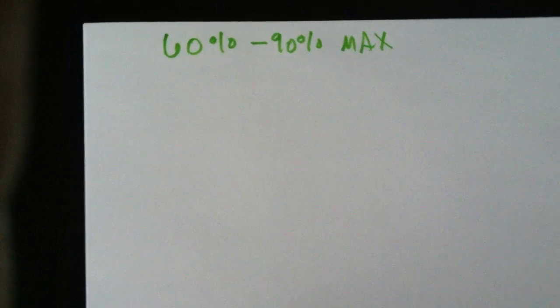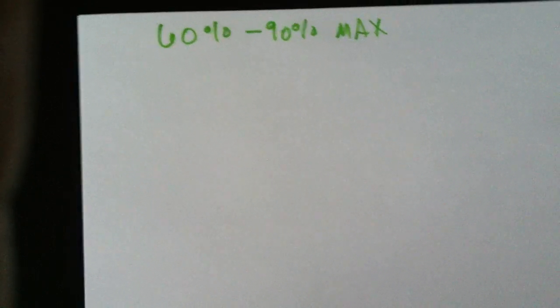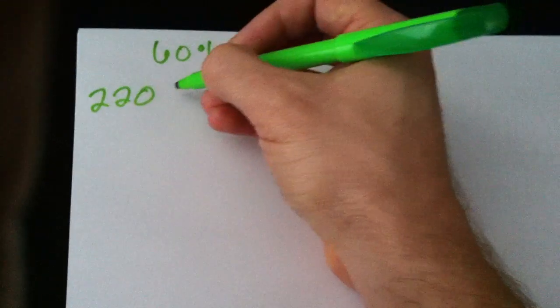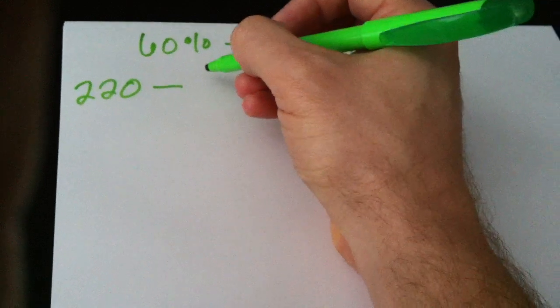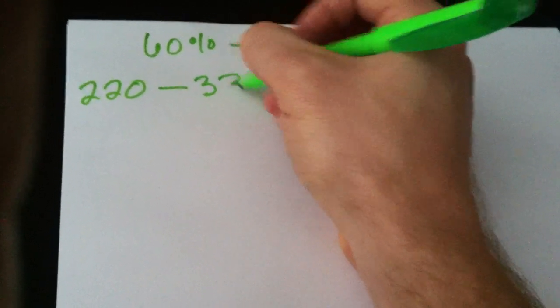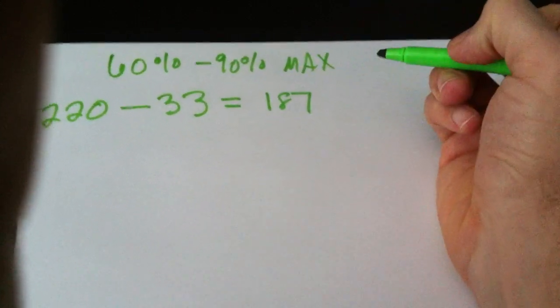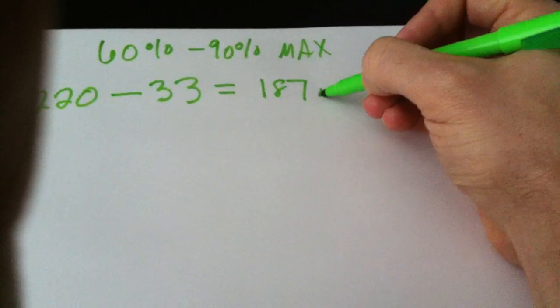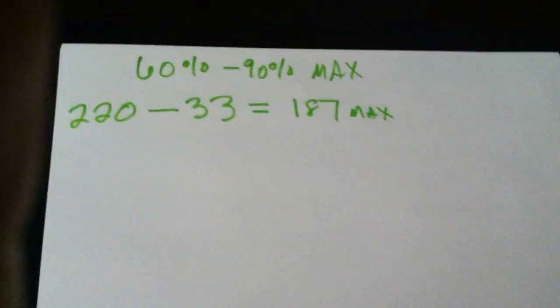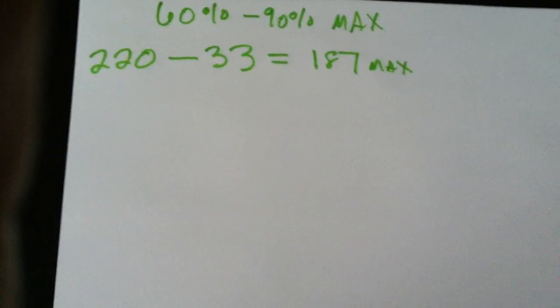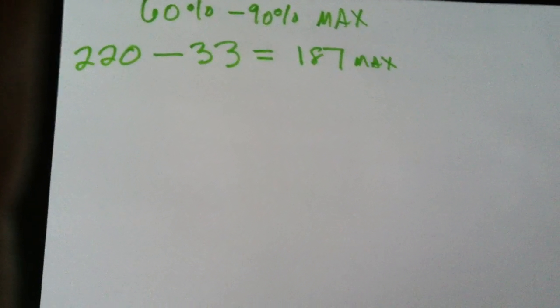So first thing you're going to do to get your target heart rate is, and this is for everybody, you start off with 220. And what that is is 220 beats per minute for your heart rate. And then you're going to minus your age. We're going to use mine once again today. So my age is 33. And that is going to equal 187. And that is my max target heart rate that I ever want to get to. I never want to go over that 187. That 187 is me going at 100%.